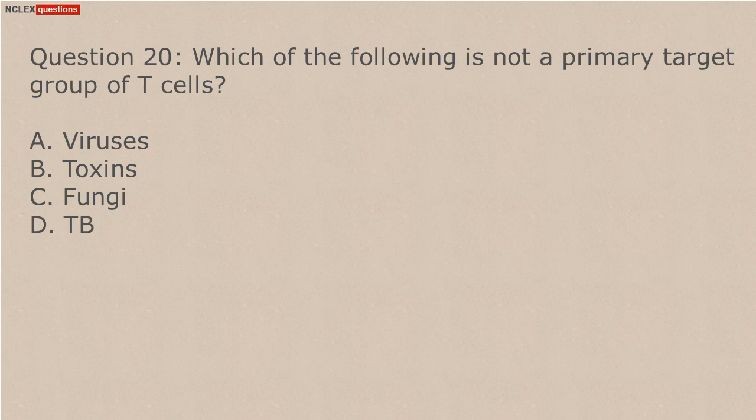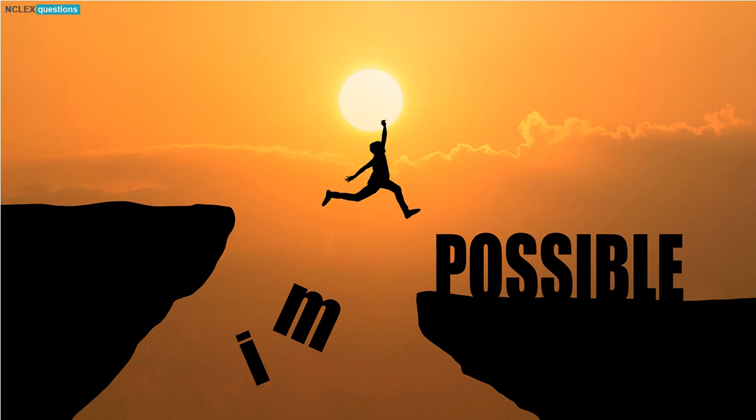Question 17. Which of the following types? Answer: D. Carotid arteries. Answer: D. Carotid arteries. Answer: A. Delayed hypersensitivity.